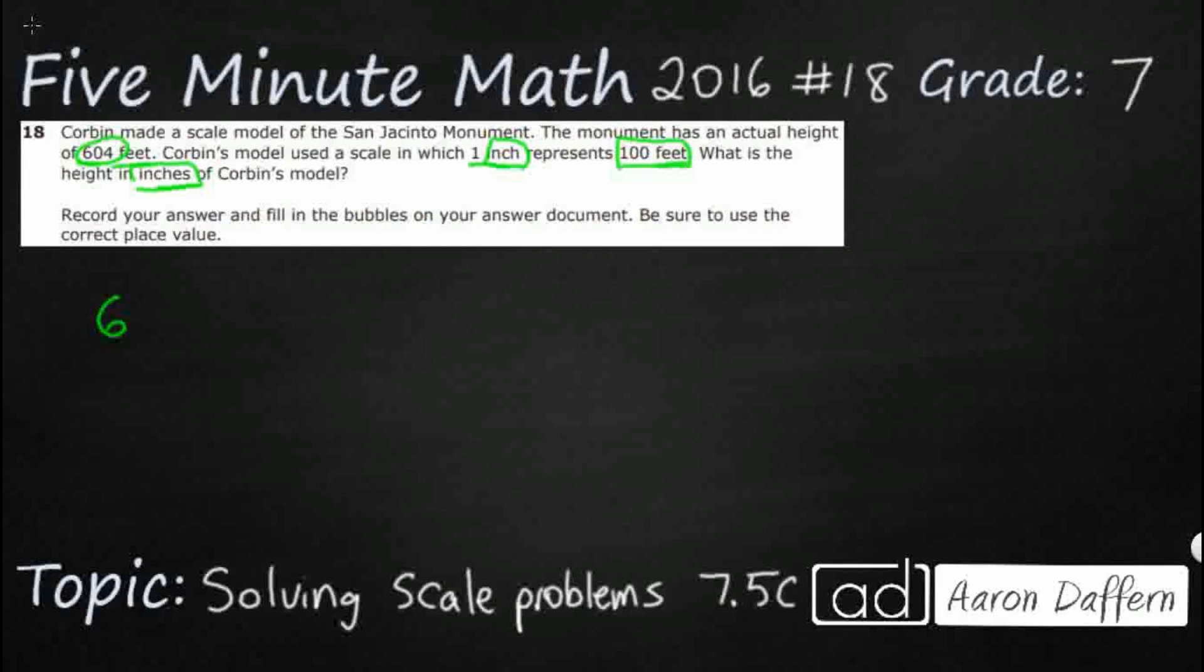Let's see, 604 feet. So we're going to make our little proportion here. Over how many inches? I'm going to make my proportion of the actual scale model to the actual height. So this is my missing inches.